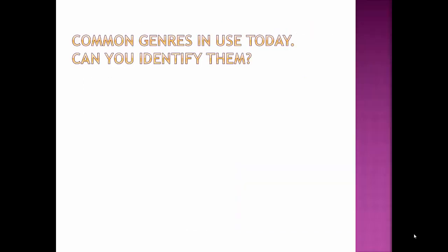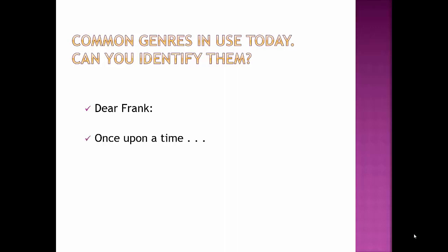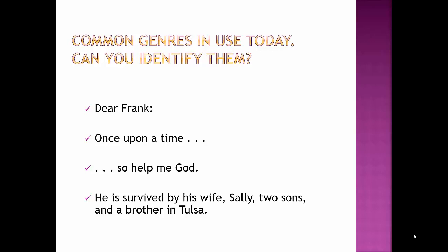An important skill you will develop in this class is how to distinguish genre — the type or kind of literature. We instinctively recognize most genres without a thought. For example, most of us easily recognize that a document beginning with 'Dear Frank' is a letter. If you read the phrase 'Once Upon a Time' in a book, you instinctively know that we are dealing with a fairy tale. 'So Help Me God' — if you watch cop shows, you'll recognize this as an oath made in a court of law. 'He is survived by his wife Sally, two sons, and a brother in Tulsa' is an obituary. Each of these four — letter, fairy tale, oath, and obituary — represent different genres.